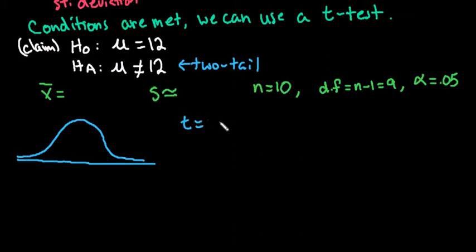Remember our formula is t equals x bar minus mu over s divided by square root of n. This gives us our sample statistic, and then we will figure out whether this is unlikely or not based on our p-value.